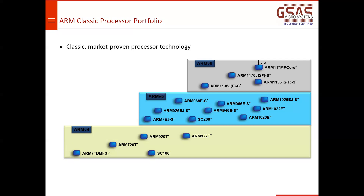We have ARM7TDMI, then secure cores, then ARM v5 with ARM9. ARM v5 supports porting of Linux — if you're working on the ARM9 processor core series, it supports Linux porting and has a memory management unit. ARM v4 (ARM7TDMI) can only run micro C Linux, whereas ARM v5 and ARM9 can run full Linux.